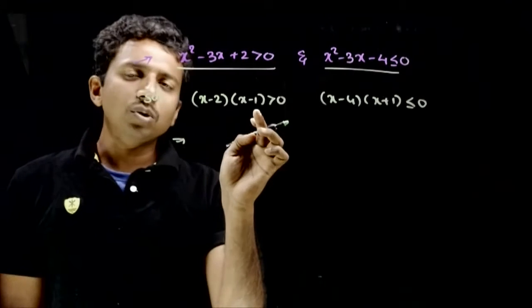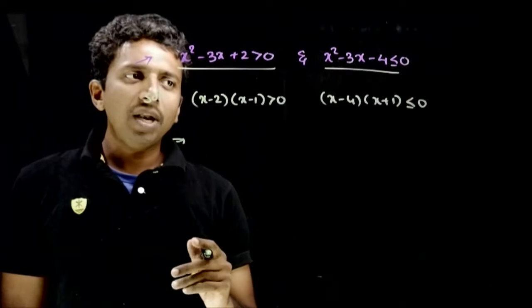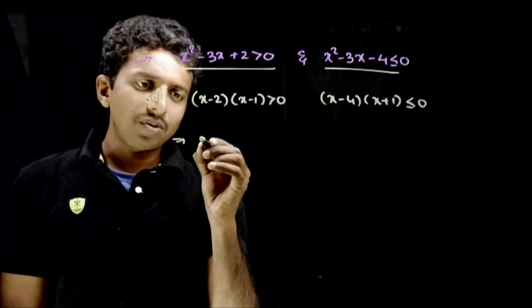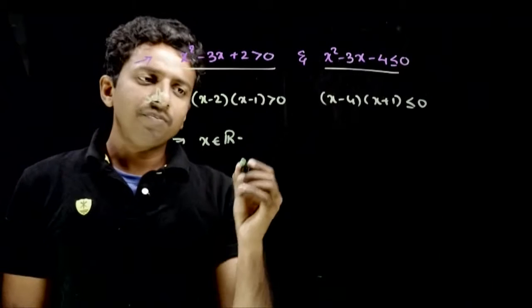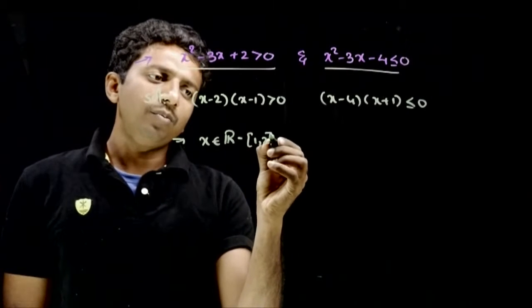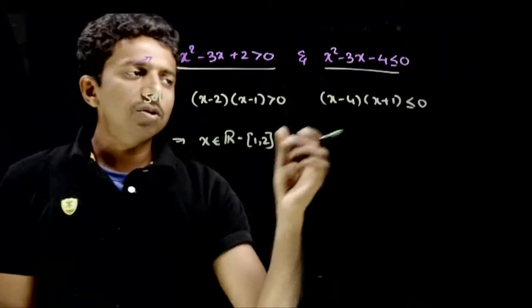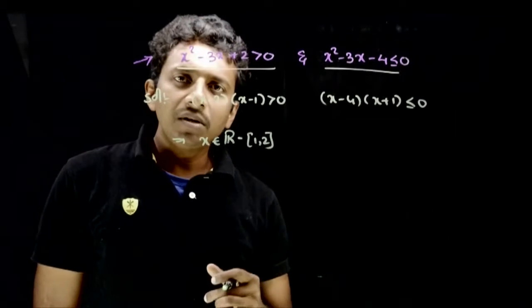So what will be the answer? The roots are 1 and 2, so x has to lie outside 1 and 2. So x belongs to all real numbers except 1 to 2.